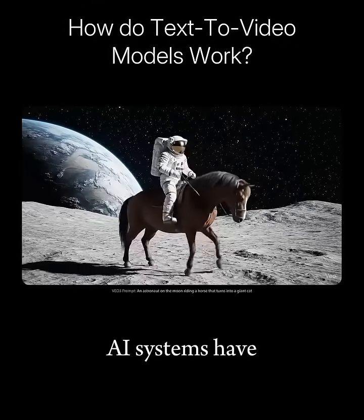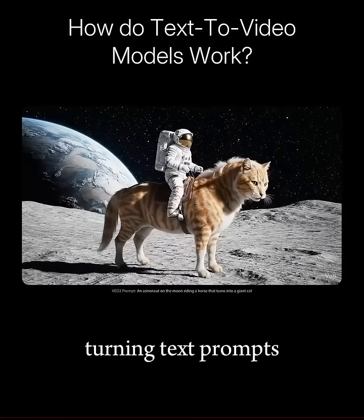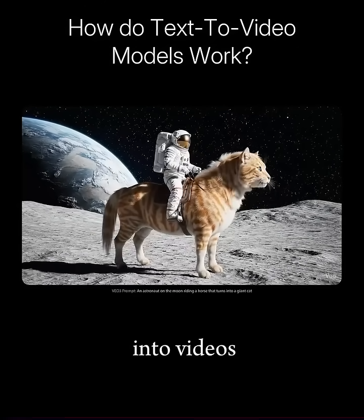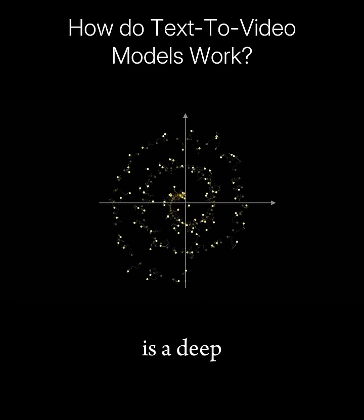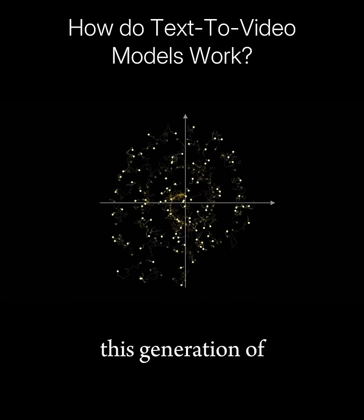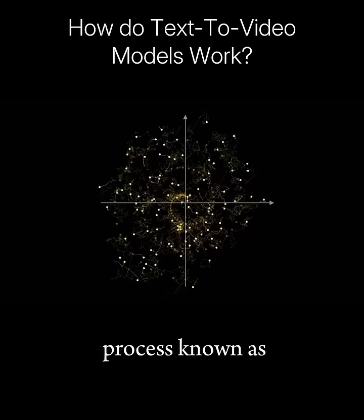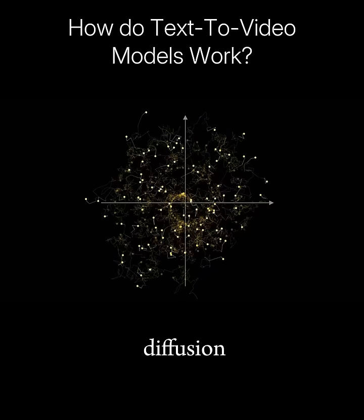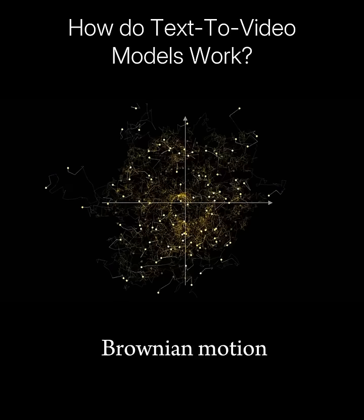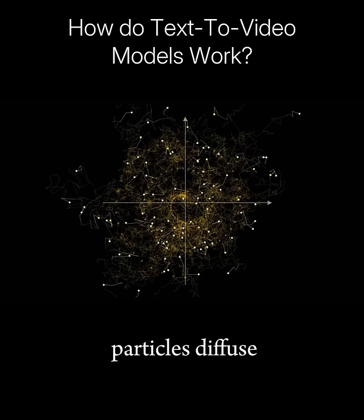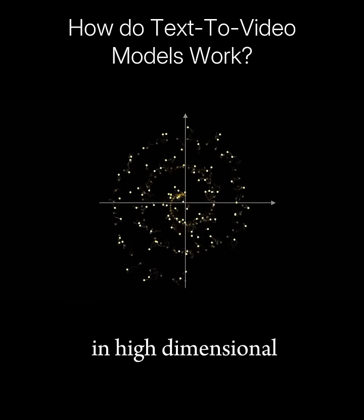Over the last few years, AI systems have become astonishingly good at turning text prompts into videos. At the core of how these models operate is a deep connection to physics. This generation of image and video models works using a process known as diffusion, which is remarkably equivalent to the Brownian motion we see as particles diffuse, but with time run backwards, and in high dimensional space.